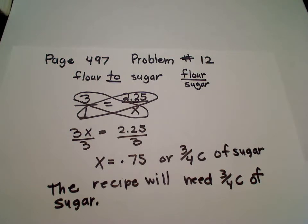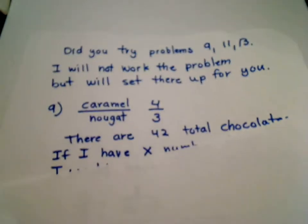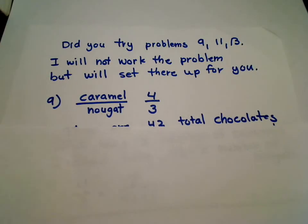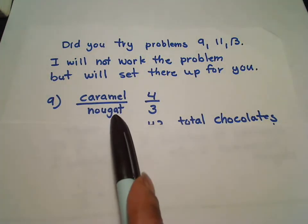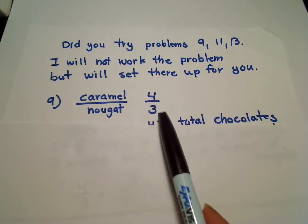Now my next sheet that I'm going to show you, I'm not going to finish the problems but I'm going to give you an idea of what you should be doing when you go to do problems 9, 11, and also problem number 13. If you take a look at problem number 9, like I said, I'm not going to work them out, but I will show you. So for problem number 9, we've got caramels and nougats, and they say that it's 4 to 3.